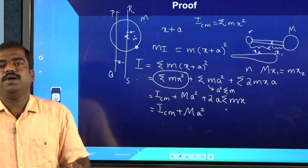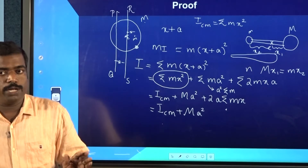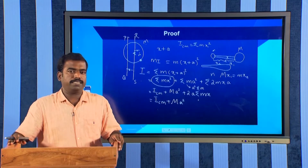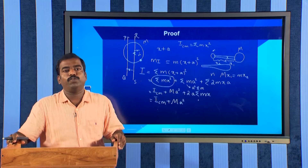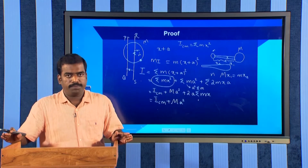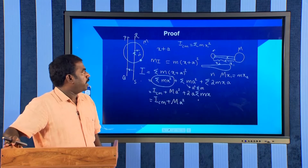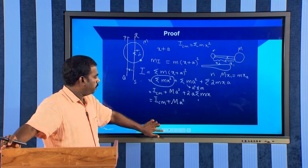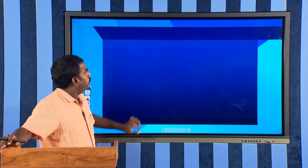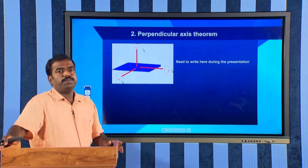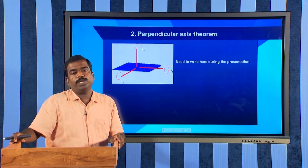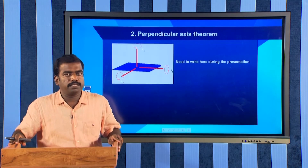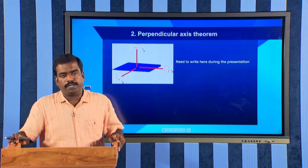Hence the parallel axis theorem is proved: I = ICM + Ma². This is very important — you need to expect a question asking you to state and prove the parallel axis theorem. Similarly, another important theorem is the perpendicular axis theorem. We need to learn both: the parallel axis theorem and the perpendicular axis theorem.